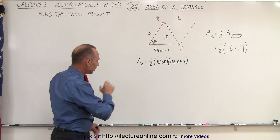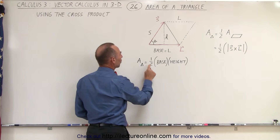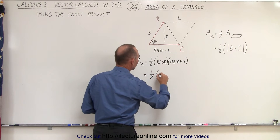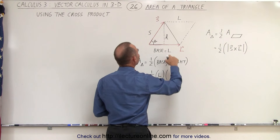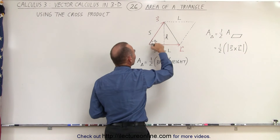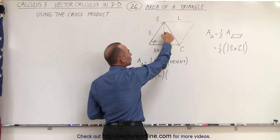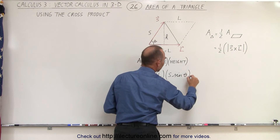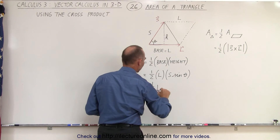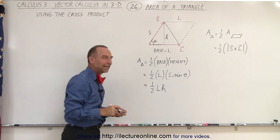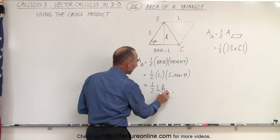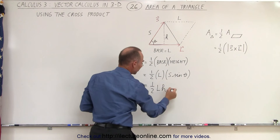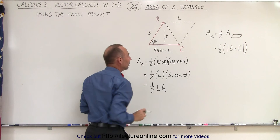We can also look at it slightly differently. The area of a triangle is equal to one-half the base times the height. Here, that's one-half times L times the height, and the height can be found by taking the side S — which is the hypotenuse of this triangle — and multiplying by the sine of the angle theta, because H is the opposite side to that angle. So this becomes S times sine of theta, giving us one-half times L times H, which is the area of the triangle. L times H is the equivalent area of the rectangle, and half of that is the area of the triangle.